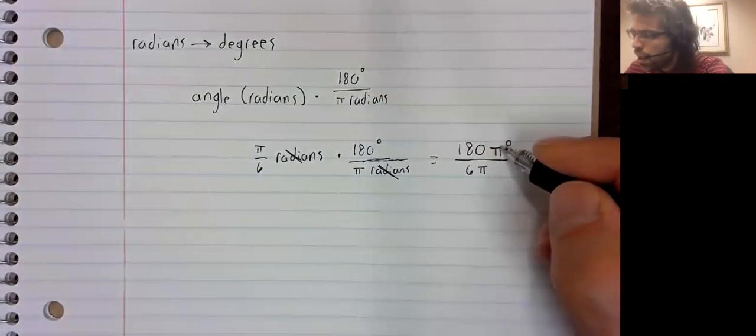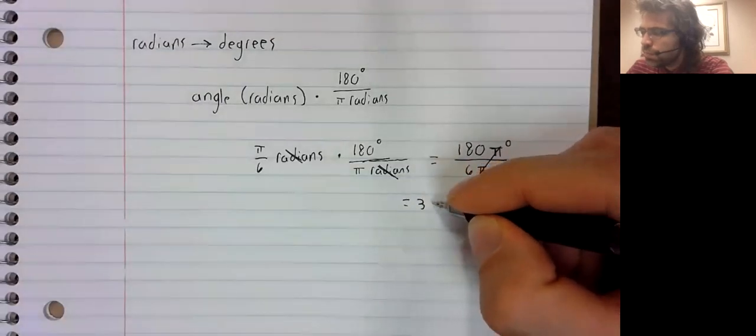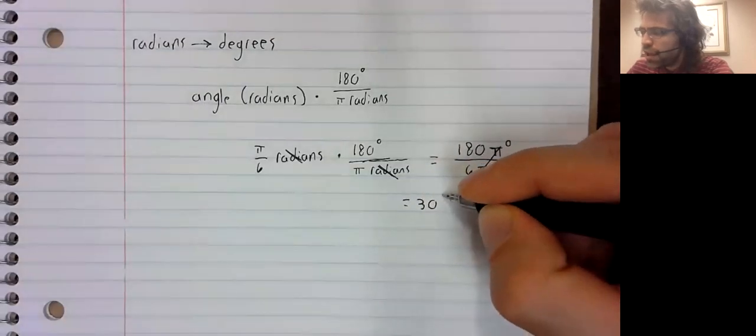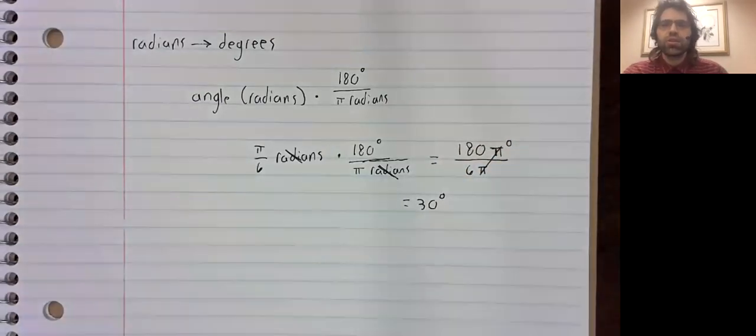Our pi's cancel. And 180 divided by 6 is 30.